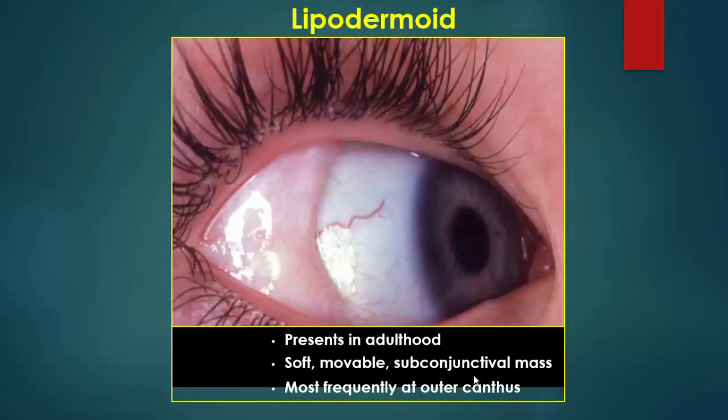Lipodermoid is present in adulthood as a soft, movable subconjunctival mass, most frequently present at the outer canthus.